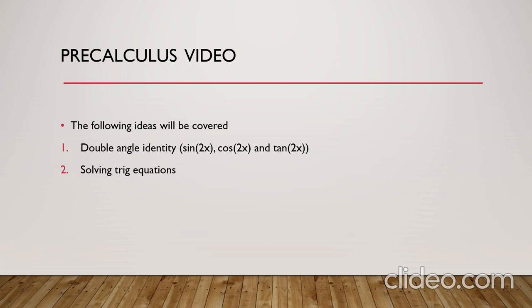We will start this week by talking about an important identity which is the double-angle identity. We have three double-angle identities: sin2x, cos2x, and tan2x.